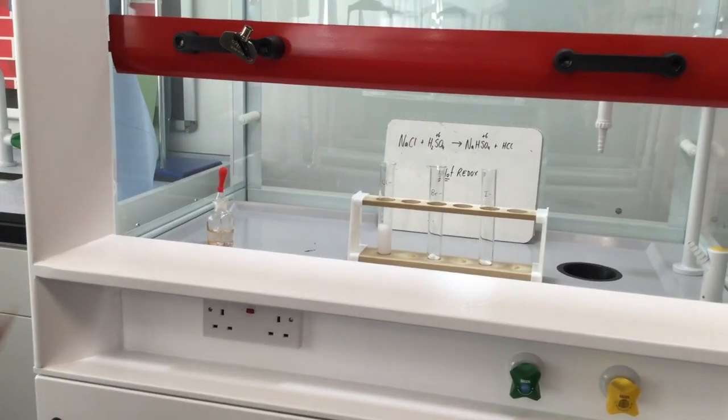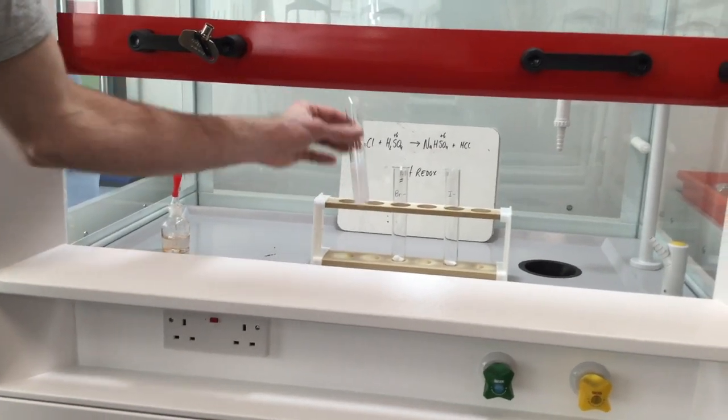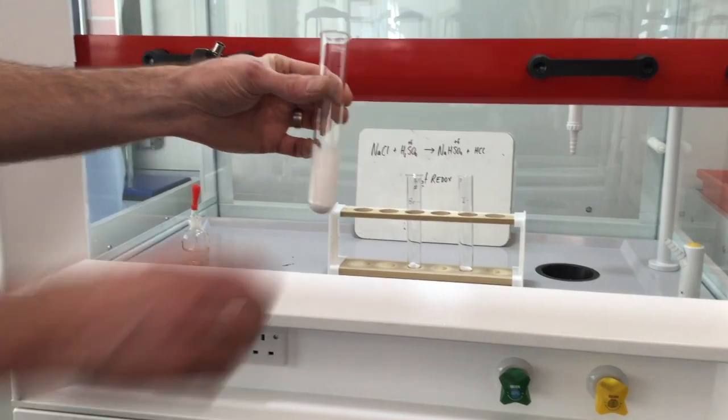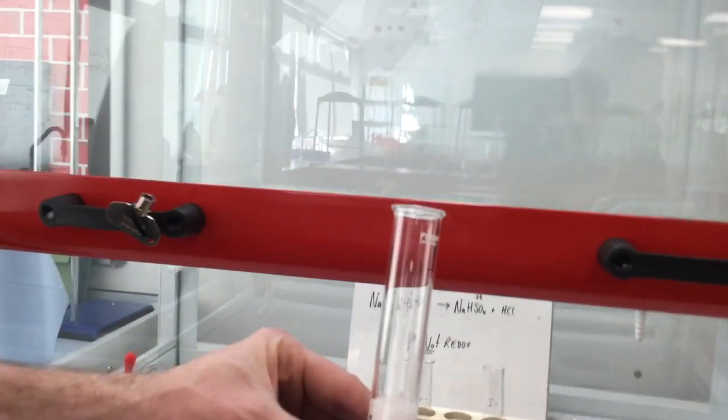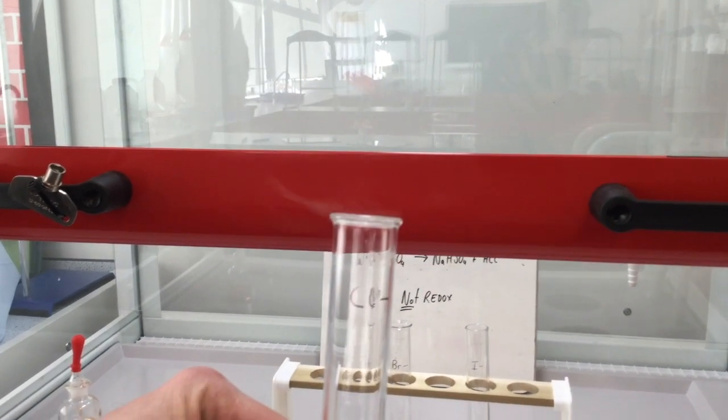The concentrated acid is reacting quite violently with the chloride and it should be producing white misty fumes of hydrogen chloride gas, which are quite difficult to see but you might be able to see some coming out of the top of the test tube.